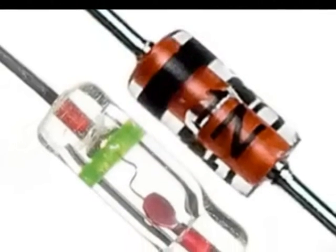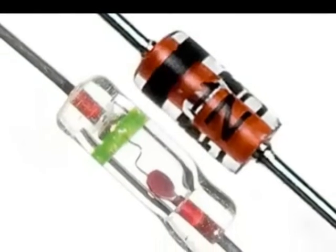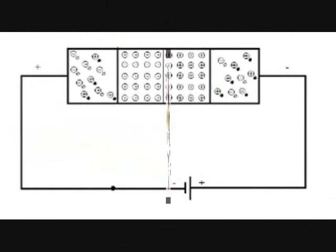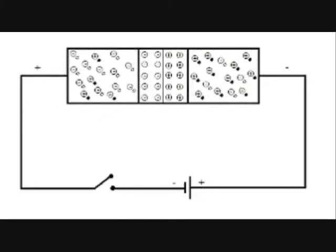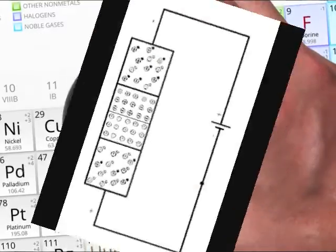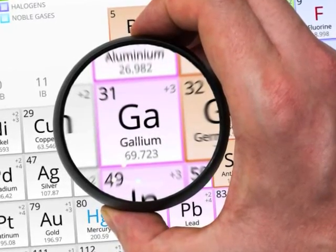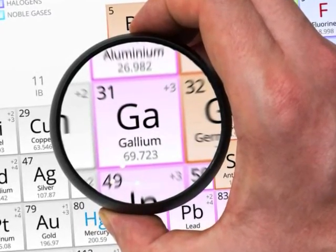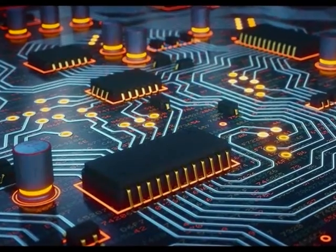However, germanium diodes have one major advantage over silicon. Germanium has a higher electron and hole mobility, and thus germanium devices can operate at higher frequencies than silicon devices. Germanium diode is superior to silicon diode in terms of energy loss and current loss.